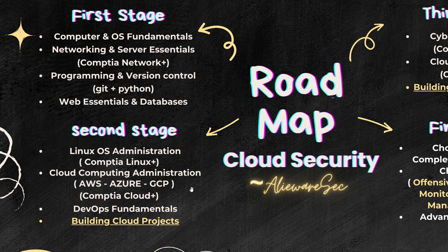Now we'll focus more on cloud. You have to learn about cloud computing, because you can't get into cloud security without knowing what cloud is. Go for AWS, Azure, and GCP (Google Cloud Provider). Learn their basics — AWS Cloud Practitioner, Azure AZ-900 fundamentals, and GCP's basic certificate. Get your hands on those materials; you don't necessarily have to spend money on the exam, but learn the fundamentals. CompTIA Cloud+ is also a great option as it covers all three cloud service providers, so definitely check that out.